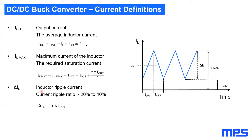Typically, ripple current is set at a ratio of 20% to 40% to start with the calculations.